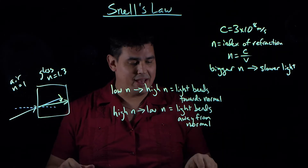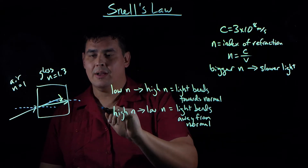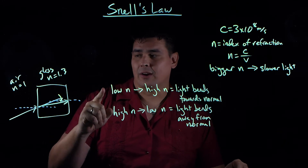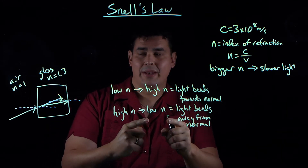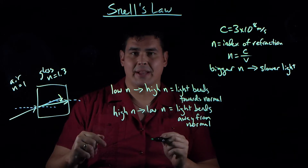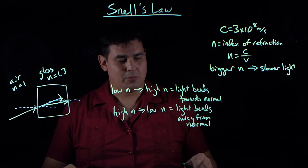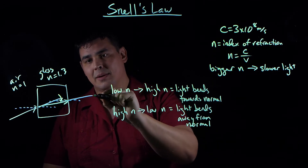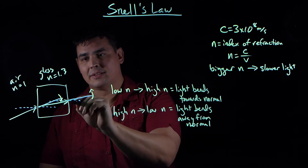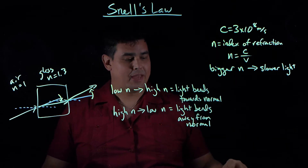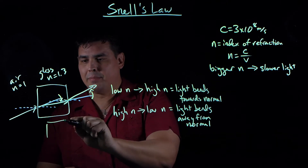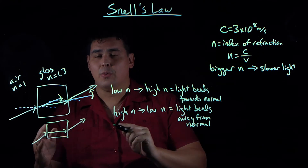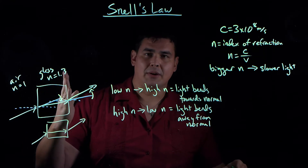Now let's look at when the light comes out. Drawing my normal line again — perpendicular to the surface. Light is going from glass back to air, so from a high index of refraction to a low index of refraction. It's going to bend away from the normal. So it goes in like this, then bends one way, then bends back — giving you two bends total when crossing through the glass block. When it crossed into the glass it bent towards the normal, and when it came out it bent away.